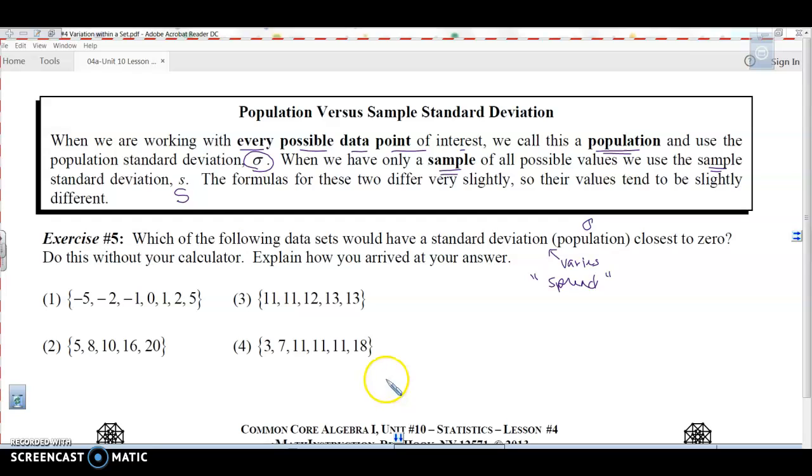Which one of these would have a spread that is closest to zero? Basically, which one, if it's closest to zero, is not spread out very much? Let's look at our data points that we have.